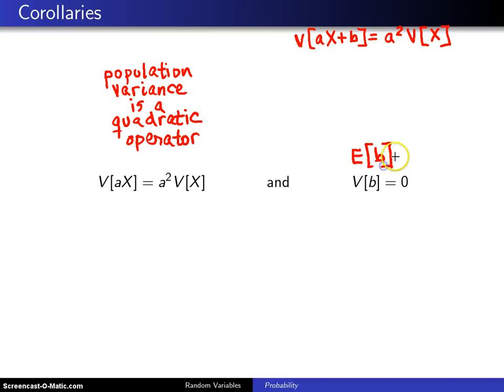That is, the expected value of a constant is a constant and the variance of a constant is 0.